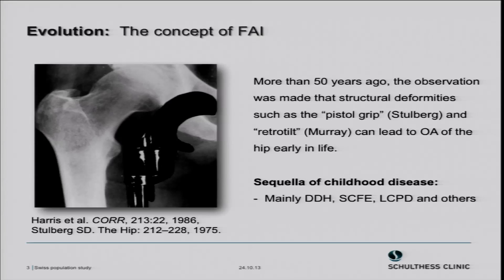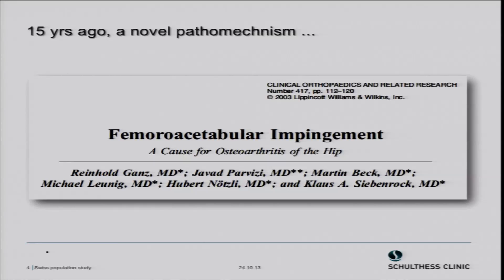When we go back to the concept of femoroacetabular impingement, we have known for more than 50 years that structural deformities of the hip — such as a pistol grip, first described by Stuhlberg, and the retro tilt, first described by Murray — can lead to osteoarthritis of the hip. This occurs not at age 70 or 80, but early in life. Most of these deformities are sequelae of childhood diseases such as hip dysplasia (DDH), slipped capital femoral epiphysis (SCFE), Perthes disease, and others. About 15 years ago, Professor Gantz published a paper on femoroacetabular impingement as a cause for osteoarthritis of the hip.